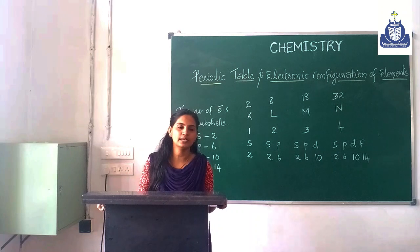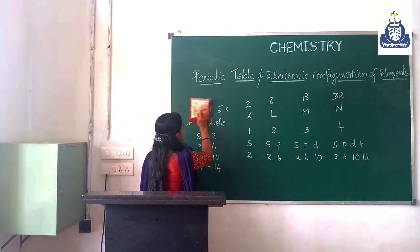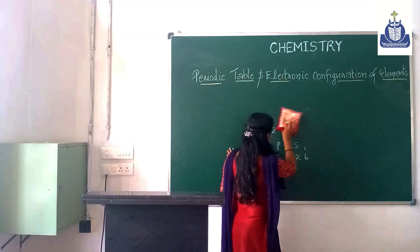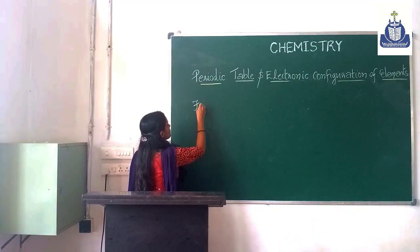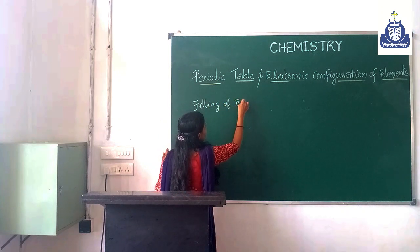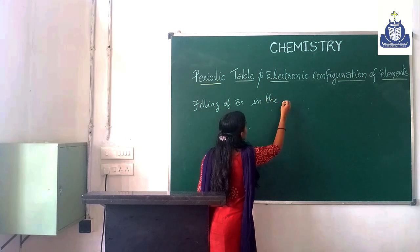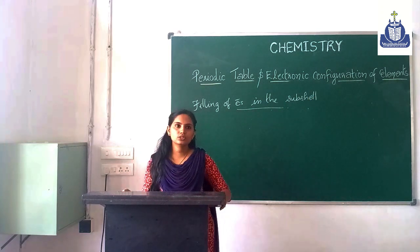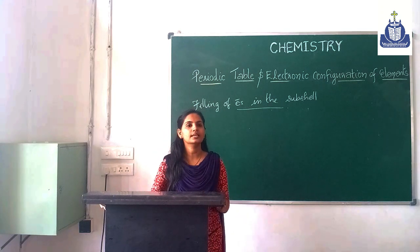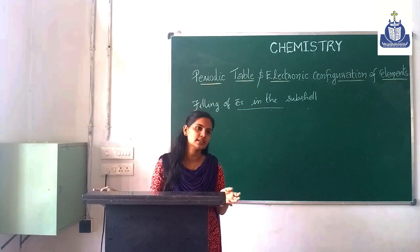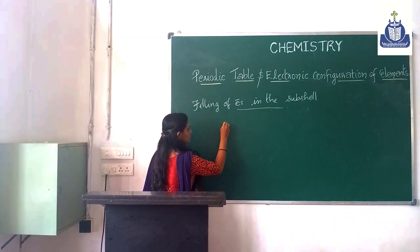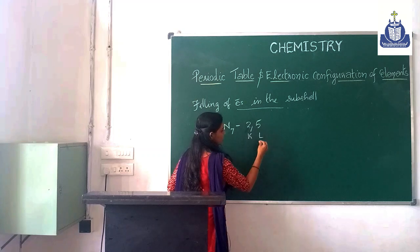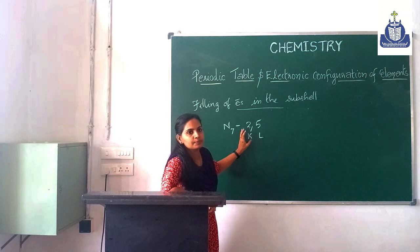Our last topic is the filling of electrons in the subshell. The electrons are filled in shells in the increasing order of their energy. The first 2 electrons are filled in the K shell, which has the lower energy.